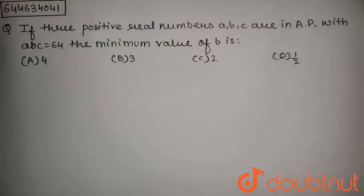The question is, if three positive real numbers A, B, C are in AP with A times B times C equals 64, the minimum value of B is.